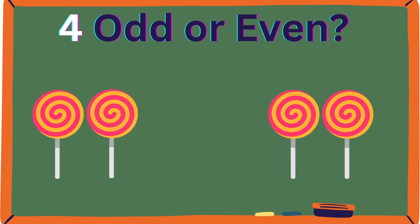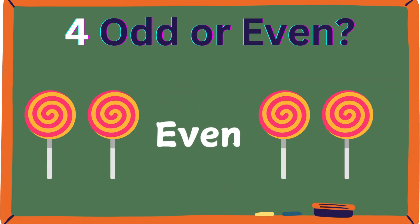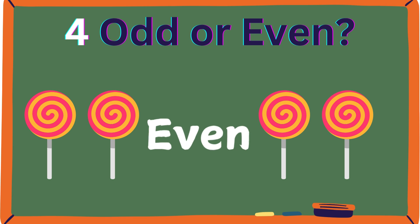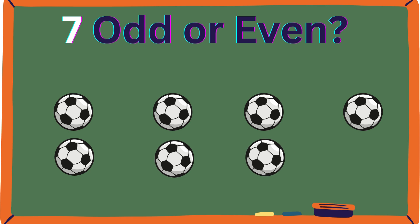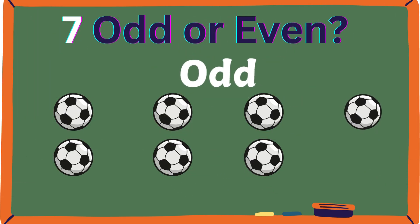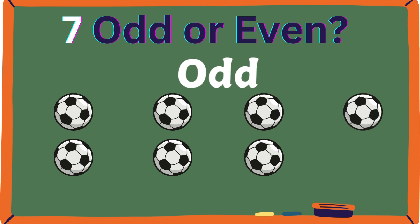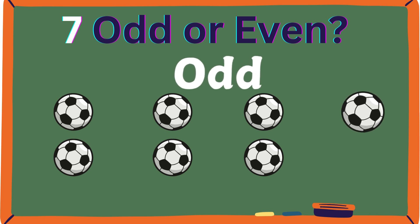Let's look at some more examples. Four — odd or even? Even is correct. Four can make two pairs of two. Seven — odd or even? Odd. Seven is an odd number. It can make three pairs of two with one ball left over.